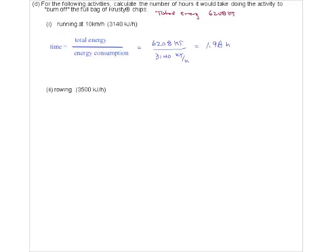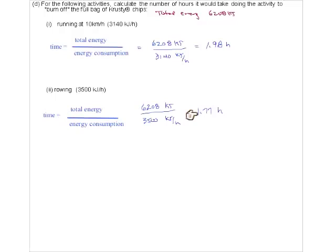Two hours of running - how far is that? Running at 10 km/h for 2 hours = 20 kilometers. That's half a marathon! How about rowing? You burn a little more energy because you're using more muscles - back, arms, legs - so you'd need to row for 1.77 hours.